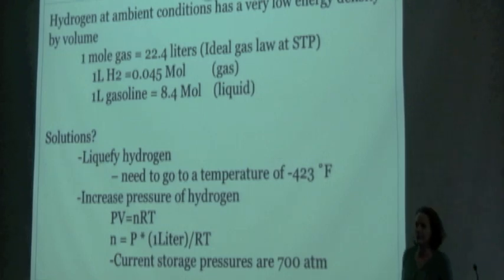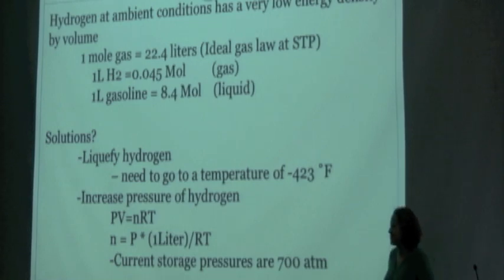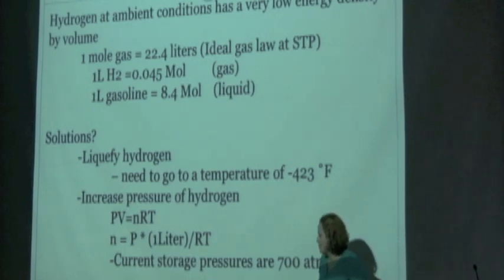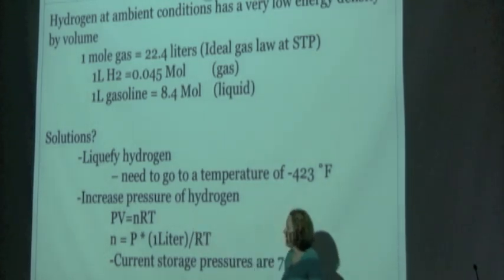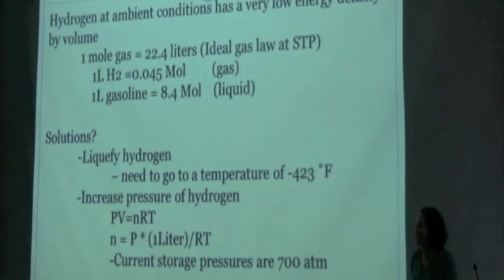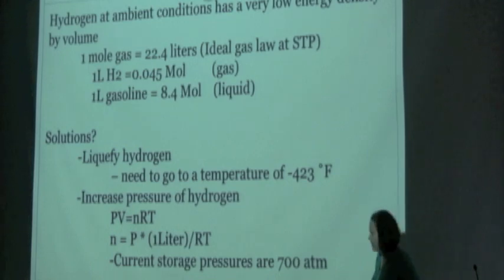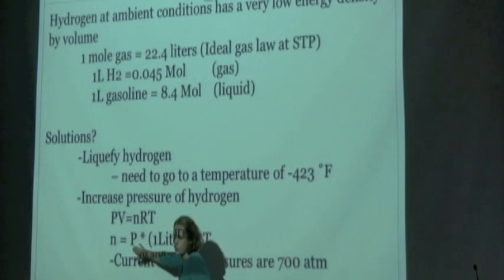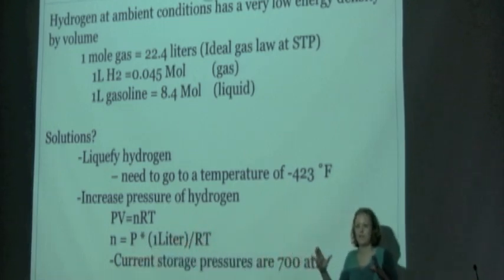So another way that people have talked about storing hydrogen is to increase the pressure. And this is probably another relationship that you're going to learn in the next couple of weeks. The relationship between the volume, the pressure, the temperature, and the number of moles of a gas. So if you keep the volume the same, and R is the ideal gas constant, you keep the temperature the same. If you increase the pressure, then you can increase the number of moles in that same volume.